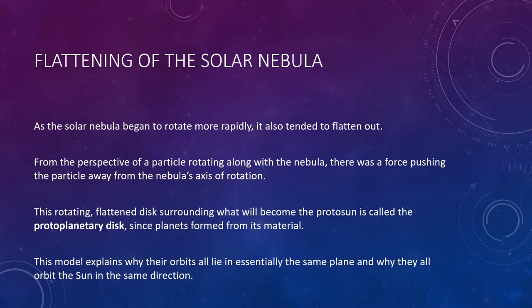As the solar nebula began to rotate more and more rapidly, it also tended to flatten out. From the perspective of a particle rotating along with the nebula, it felt as though there was a force pushing the particle away from the center of the solar nebula—imagine you're in this nebula rotating faster and faster.